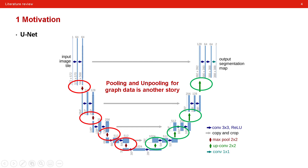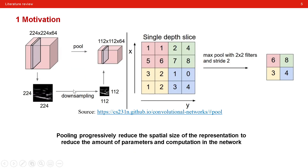Graph convolution techniques have been proposed by multiple papers before, but they have not solved the problem of pooling and unpooling on graph data. These papers suggest that pooling and unpooling need to be implemented to build UNet on graph data. Pooling progressively reduces the spatial size of the representation to reduce the amount of parameters and computation in the network. As you can see with a 3D tensor, pooling reduces the size of the matrix representation by four times.